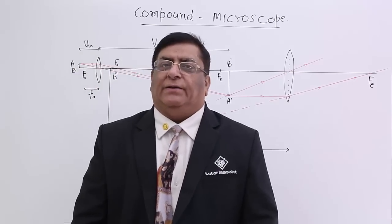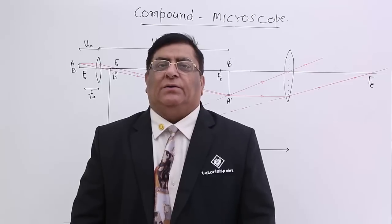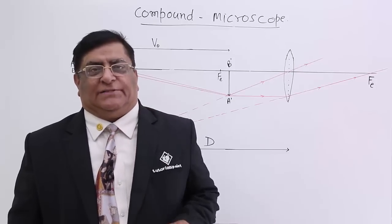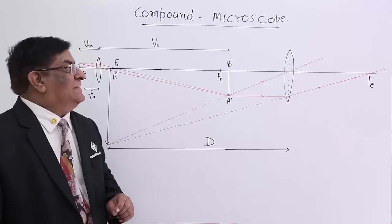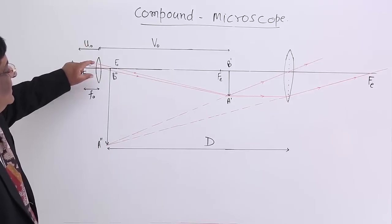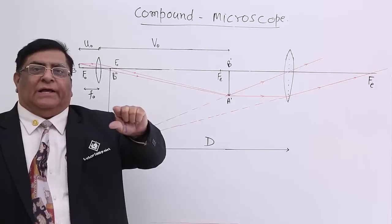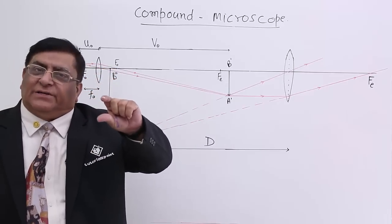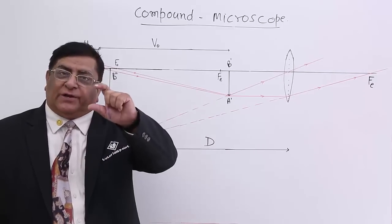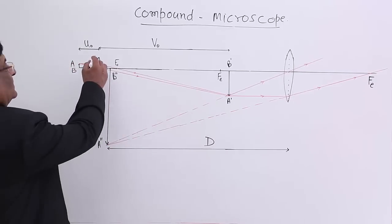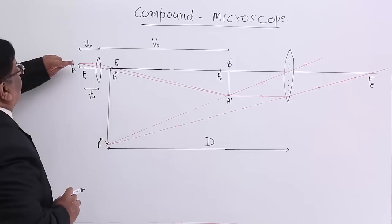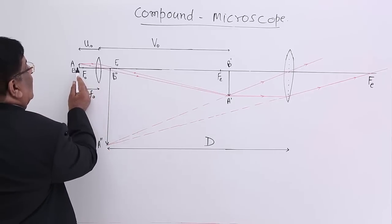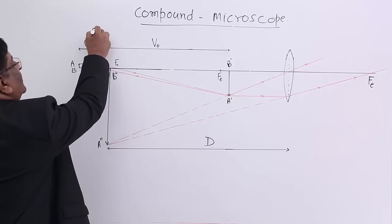A compound microscope is made by two lenses, both are convex lenses and their focal length is taken as small as possible. The aperture of one lens is small; because of this small focal length it is necessary that the aperture has to be small. This lens is placed where we have to see the object. AB is the object which we want to magnify and see, and this lens is kept near it, therefore we call it the objective lens.